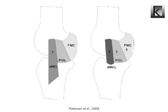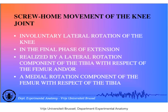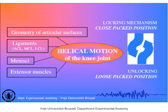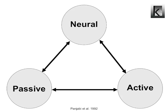The screw-home movement of the knee joint is an involuntary lateral rotation of the knee in the final phase of knee extension. The MCL plays, together with other structures, a role in this. The main function of the MCL is providing passive stability, and each MCL component has its own function.